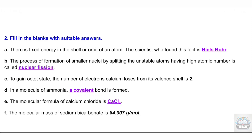B. The process of formation of smaller nuclei by splitting the unstable atoms having high atomic number is called nuclear fission. C. To gain octet state, the number of electrons calcium loses from its valence shell is 2.